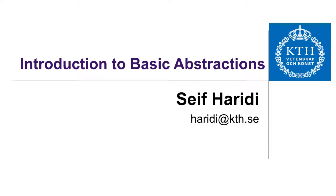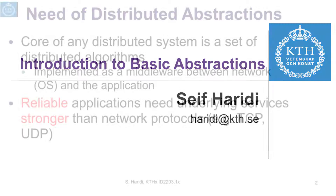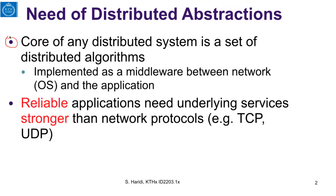Introduction to basic abstraction. The first issue we will discuss is the need for higher level abstractions than the ones provided by the network. The core of any distributed system is a set of algorithms that implement different kinds of distributed services. These are implemented as middleware between the network, the operating system, and the application. A reliable, fault tolerant application will need underlying services that are stronger than network protocols like TCP and UDP.